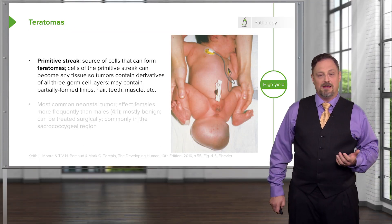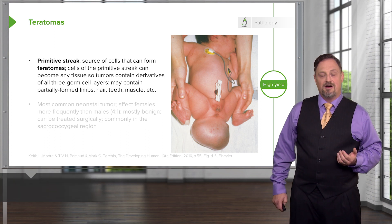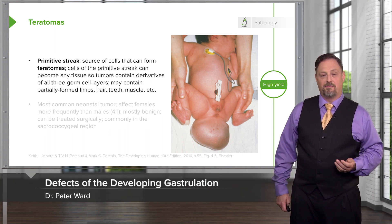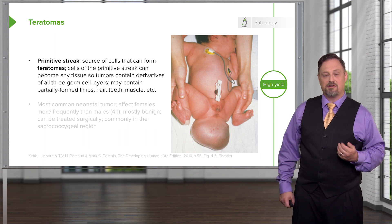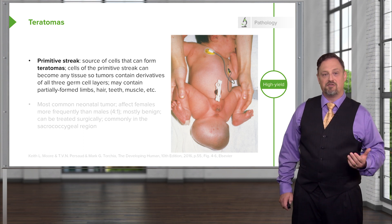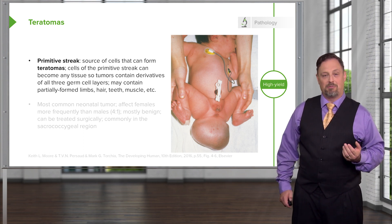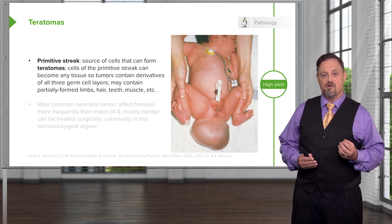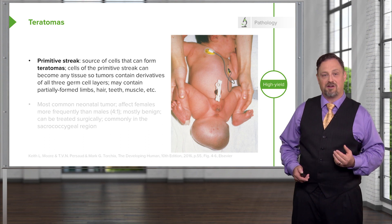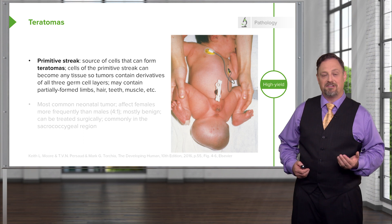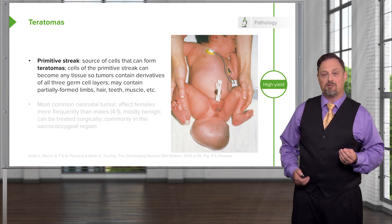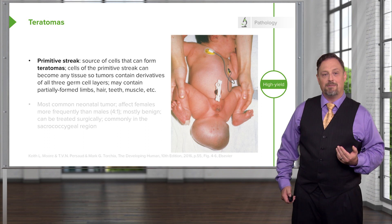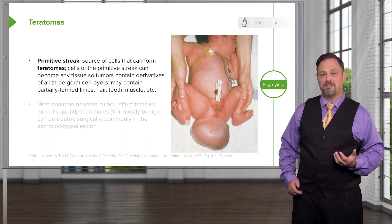Things that can go wrong in the process of gastrulation are many, and most of them are incompatible with further life. One set of structures that can create problems and make it to term are referred to as teratomas, or monster tumors. These are tumors that arise from the primitive streak, and because they come from the primitive streak, these overgrowths of cells can form any structure in the human body. Because the epiblast makes any structure in the body, tumors arising from the epiblast can form anything — it's not uncommon to find partially formed limbs, hair, teeth, and muscle inside these teratomas.